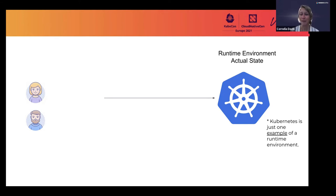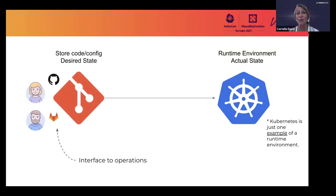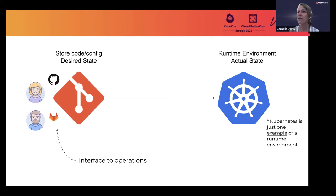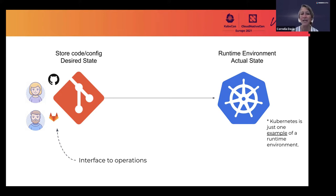This is where the Git part comes in. Git is not the only thing used for this part of the equation, but it is the most prevalent. With GitOps, those individuals responsible for running applications and infrastructure in the runtime environment do so by recording the desired state of that infrastructure in a system like Git. They use an interface to that Git system as the interface for operations — it's not that they're doing operations elsewhere and then coming back to Git to record things. That is really critical.